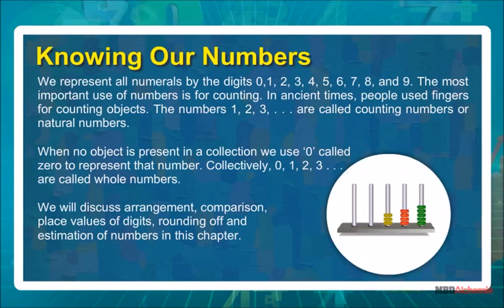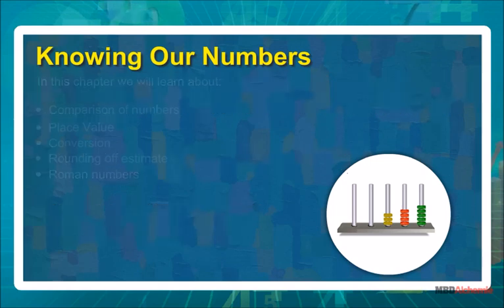We represent all numerals by the digits 0, 1, 2, 3, 4, 5, 6, 7, 8, and 9. The most important use of numbers is for counting. In ancient times, people used fingers for counting objects. The numbers 1, 2, 3, and so on are called counting numbers or natural numbers. When no object is present in a collection, we use zero to represent that number. Collectively, 0, 1, 2, 3, and so on are called whole numbers. We will discuss arrangement, comparison, place values of digits, rounding off, and estimation of numbers in this chapter.